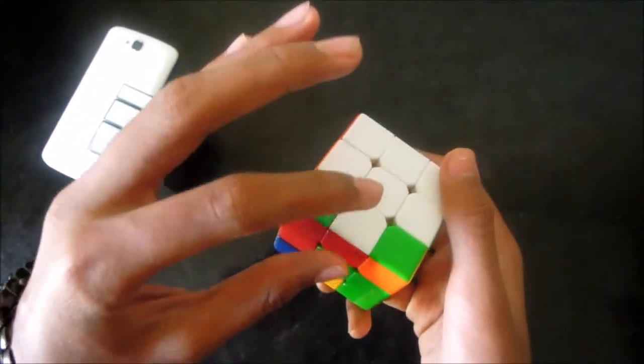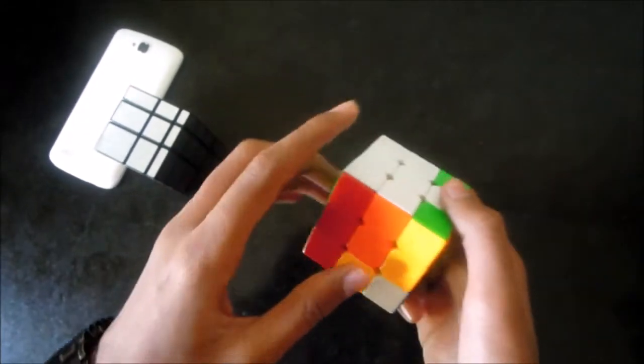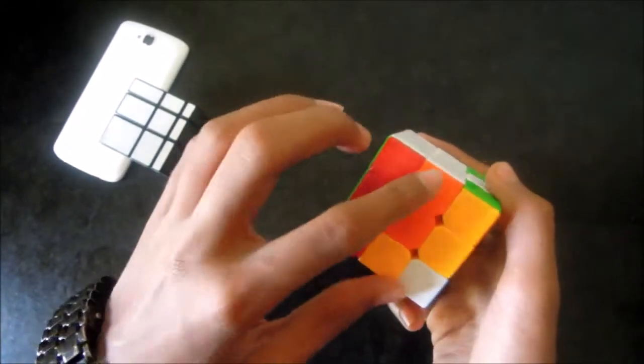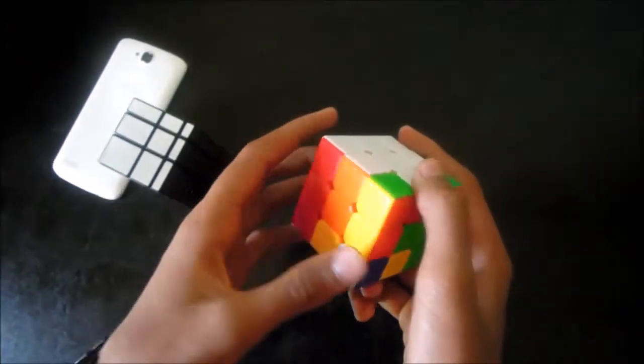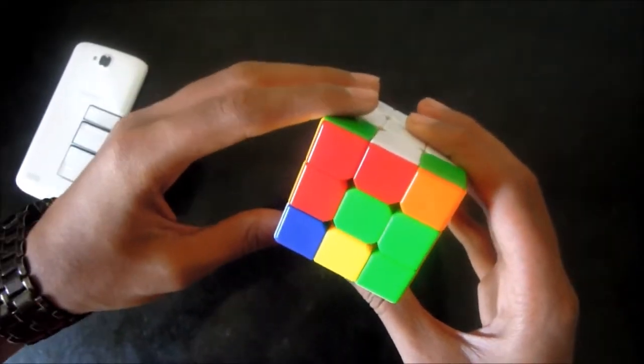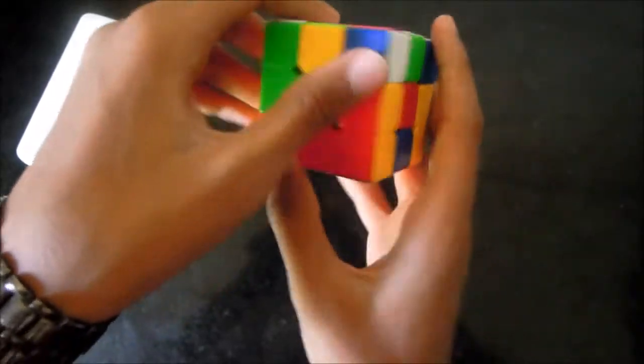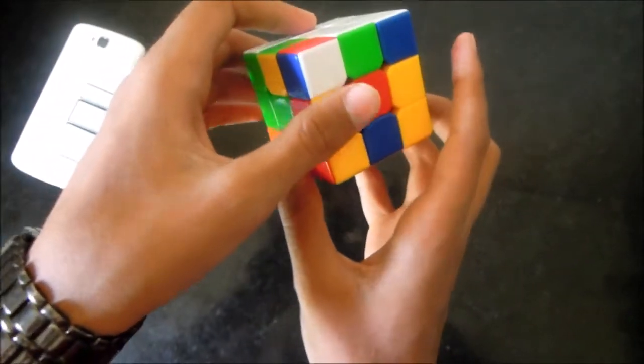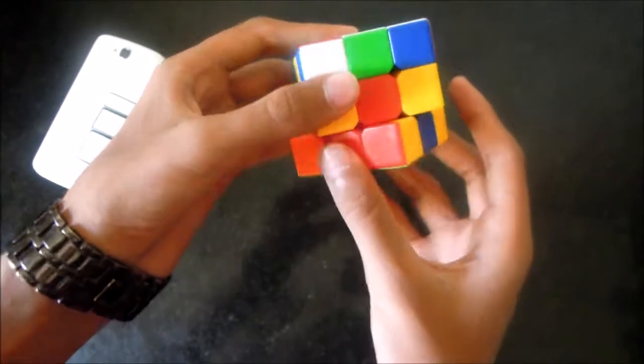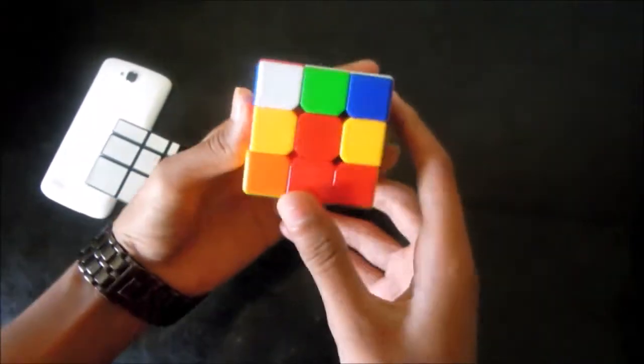So the center and the edges should match. Something like this. White, white and orange, orange. So the step for it. Move the front face twice down. Take the bottom face towards its respective color. So it's red. So I am taking it towards the left. Red.